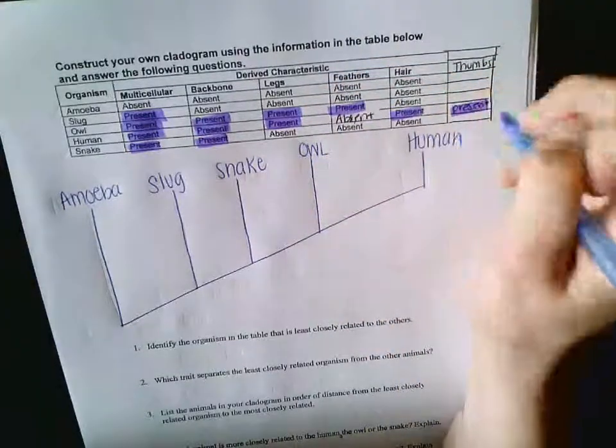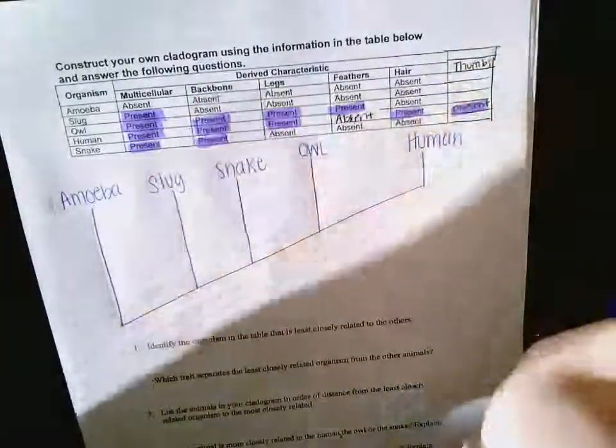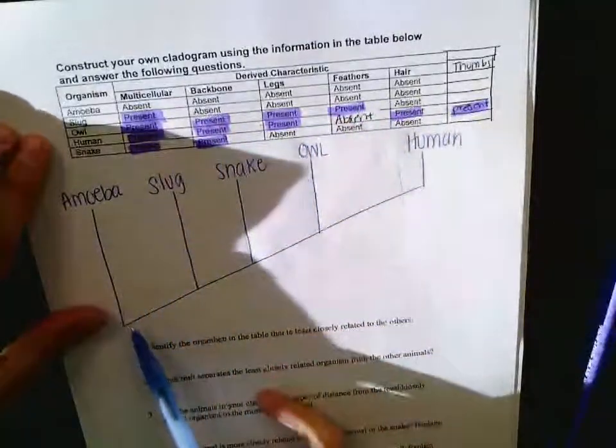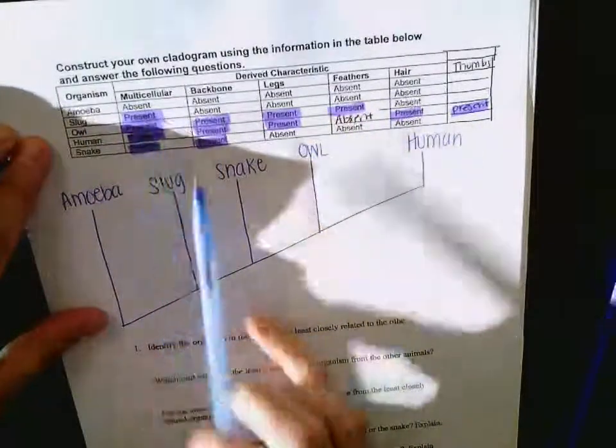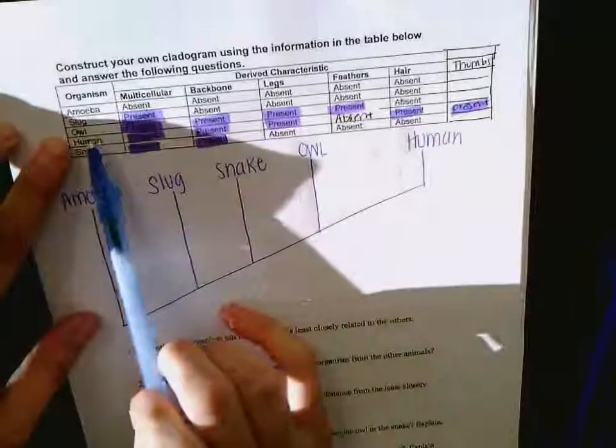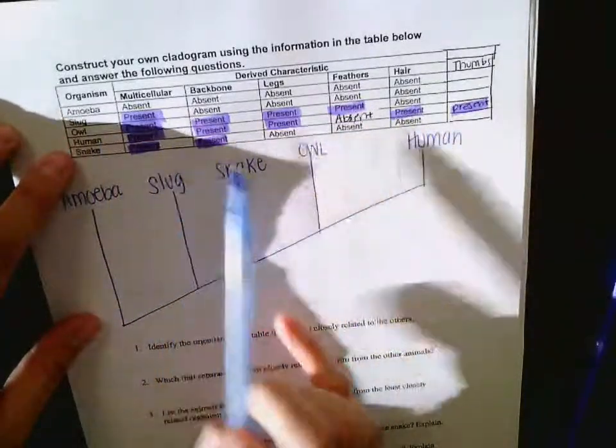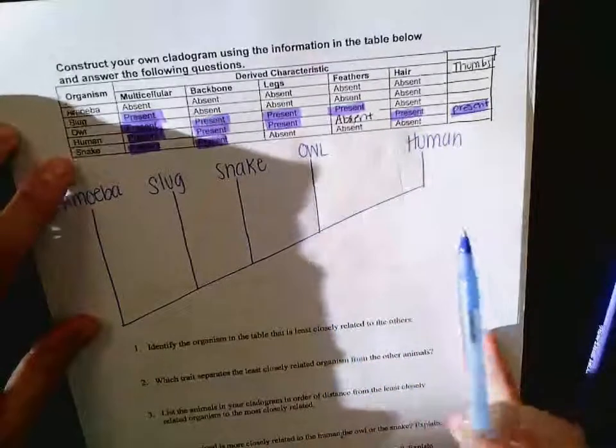Guys, the only way that we figured that out is by looking at this and saying okay, the amoeba doesn't have any of these things present so it's the most basic. The slug only has one thing present so it's going to be next, but then the owl is a little bit more complex so that can't be it. The snake only has two things present so that would be next, and then the owl and then the human.